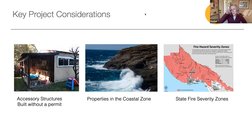Fire severity zones have been established in state responsibility areas governed by the state fire marshal. If your home is in a high or very high fire severity zone, you will need to conform to the 30-foot setbacks from all property lines. This is one of the many things you can research on the county's GIS interactive mapping system, which provides an unbelievable wealth of information — we've not seen a tool nearly this comprehensive in any other jurisdiction we've worked in. We really encourage you to start your research there.